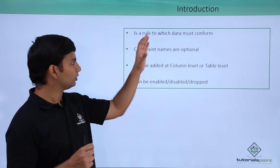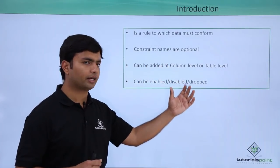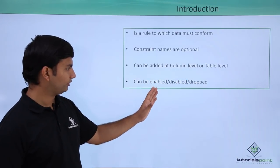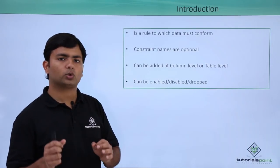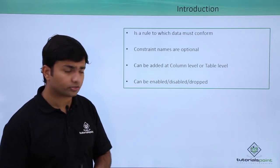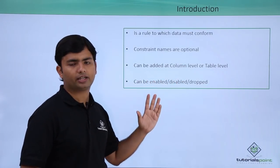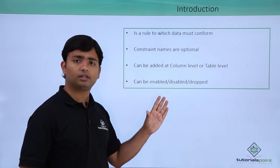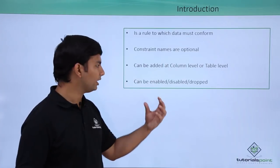Once the constraint is added, you can enable or disable that, or you can also drop that constraint. For example, if you want that at a particular time only you don't want to work with a particular constraint, so you can disable that. Later, I can enable that again. I don't have to give the complete definition. I will just pass the enable keyword with the constraint name and it will be enabled.